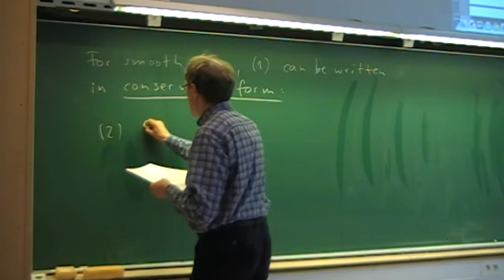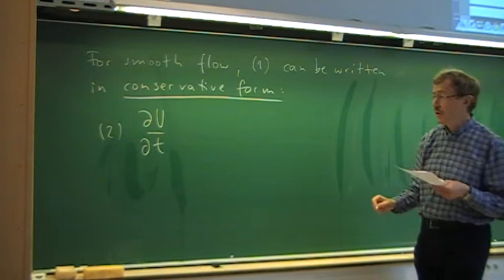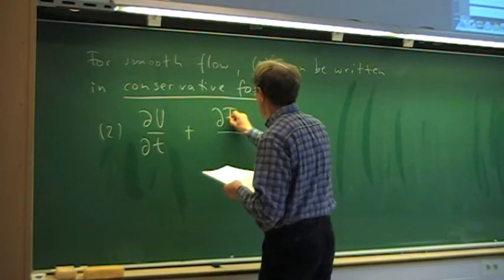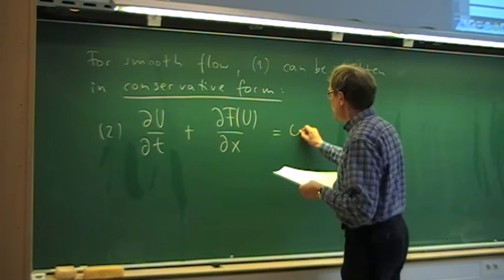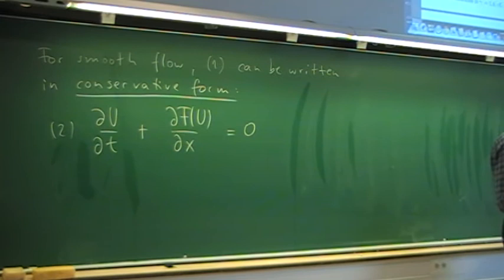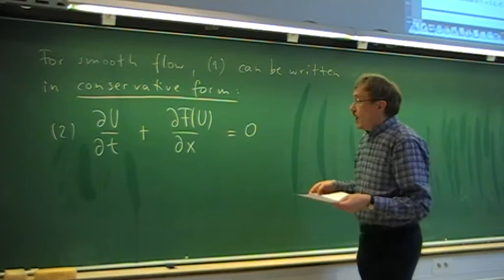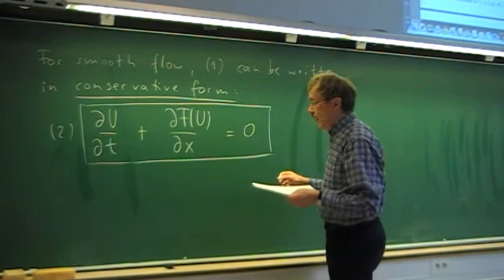We get the time derivative of the conserved variables — density, momentum density, energy density — plus the flux function f, which is a function of u, with the derivative with respect to x equal to zero. Here we assume that the source term fe is zero, so we did not take source terms into account in equation one. That is the differential form.